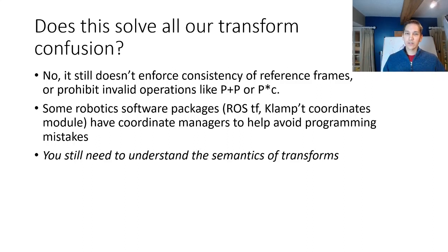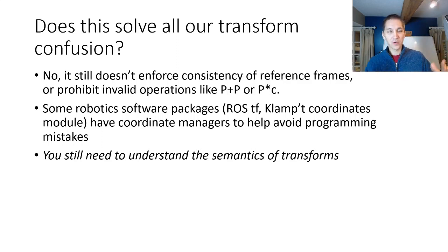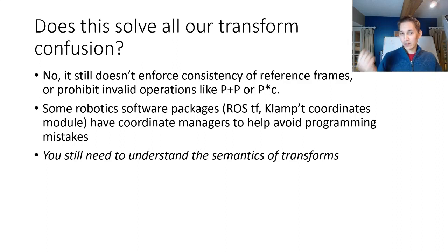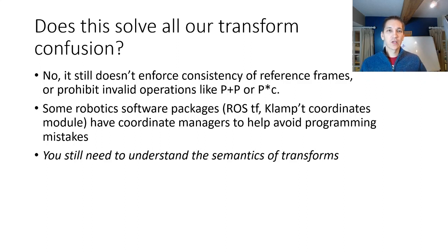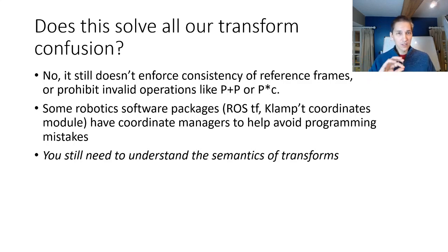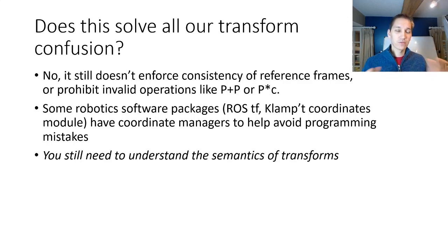Does this solve everything? It solves a lot, but it doesn't solve all of our confusion. It doesn't enforce consistency of our reference frames — we can still add two homogeneous vectors that may not make sense if they represent points in different coordinate frames. There are robotic software packages that manage coordinate transforms with semantic information to help avoid these programming mistakes, but you'll still need to understand the semantics of transforms to be a competent robotics programmer, especially for manipulation problems with many transforms between multiple different frames.